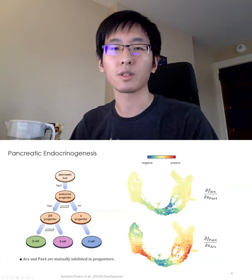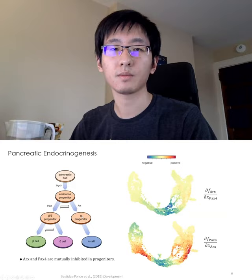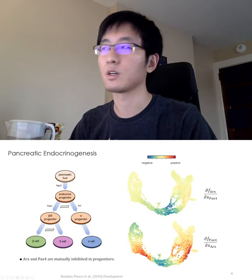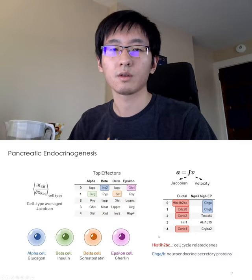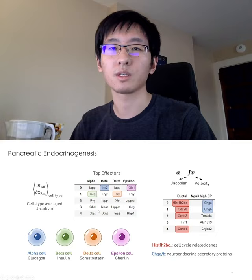The bifurcation point is where the endocrine progenitors need to take the decision to become either the beta-delta progenitors or the alpha progenitors. Two genes, PAX4 and ARX, mutually inhibit each other and form the toggle switch motif. The Jacobian analysis indeed shows that the corresponding Jacobians are negative in this region. For each cell type, we can average the Jacobians and obtain the cell type average Jacobian. Then we can rank the genes based on the Jacobian values in each cell type. For example, if we look at the ranking of the top effectors, we see all these signature genes showing up for each cell type.